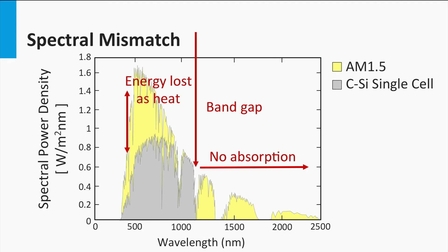Both loss processes — heating and non-absorption — depend on the band gap. The higher the band gap, the smaller the losses due to heat, but the larger the energy losses below the band gap. The smaller the band gap, the larger the losses due to heat, whereas the energy losses below the band gap decrease. This suggests that if we only consider the optical losses and ignore all other losses, we will have an optimum. The optical losses due to this mismatch between the band gap and the solar spectrum limit the maximum conversion efficiency to 48%.